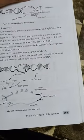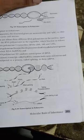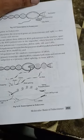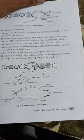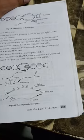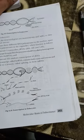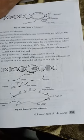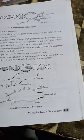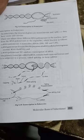In eukaryotes, structural genes are monocistronic and split. They have exons and introns. There are at least three different RNA polymerases in the nucleus apart from the RNA polymerase in the organelles. RNA polymerase I transcribes rRNA 28S, 18S, and 5.8S. RNA polymerase II transcribes the precursor of mRNA called heterogeneous nuclear RNA or hnRNA. The primary transcript called hnRNA contains both exons and introns and is subjected to a process called splicing of mRNA.